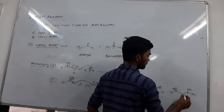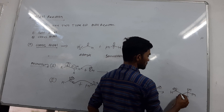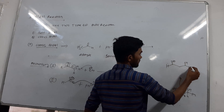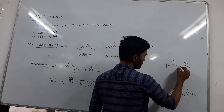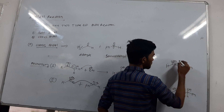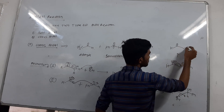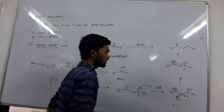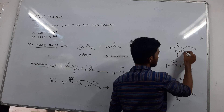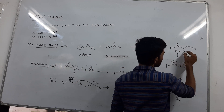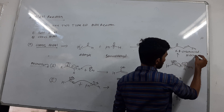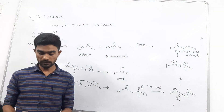OH minus abstracts the proton and formation of enolate. Then the next step is the cross-aldol reaction follows an E1CB mechanism. Formation of the product is alpha-beta unsaturated. The final product is alpha-beta unsaturated. Thank you.